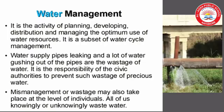Next topic is water management. In many places in our area, a regular supply of water is provided by a well-planned pipe system. When the civic authorities supply water through pipes, not all of it may reach the destination. You might have seen water supply pipes leaking and a lot of water gushing out of the pipes. It is the responsibility of the civic authorities to prevent such wastage of precious water.